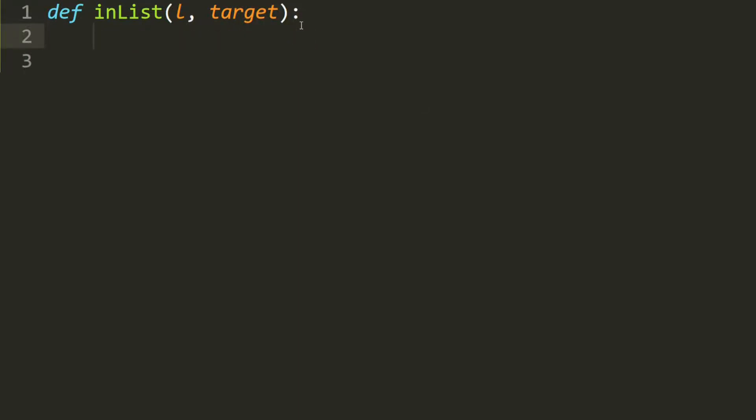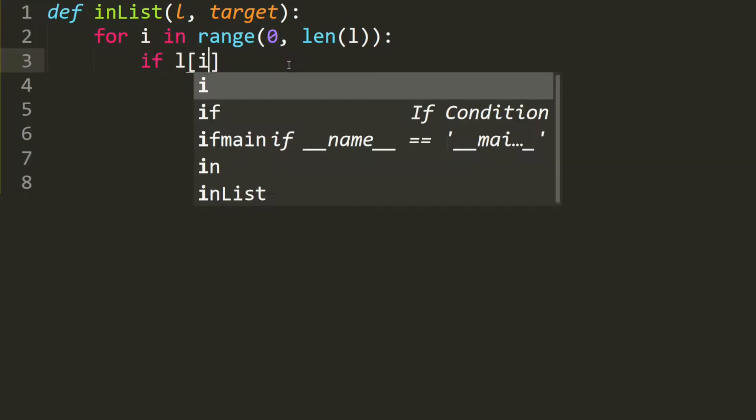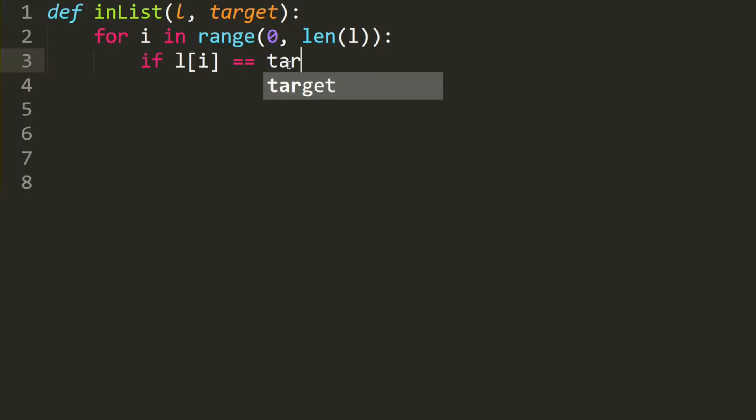We want to traverse through the list, so for i in range from 0 to the end of the list. If the content at index i is equivalent to our target, then all we have to do is return true. And after this entire for loop, and we haven't found our target, then we return false.